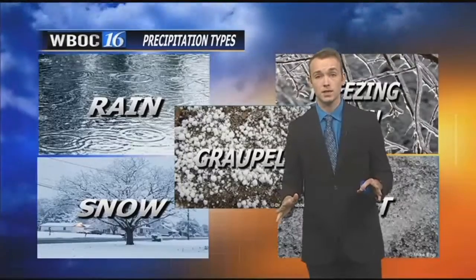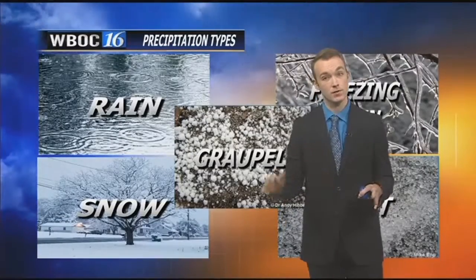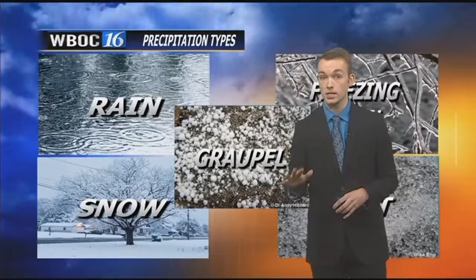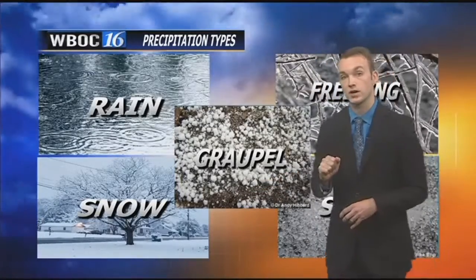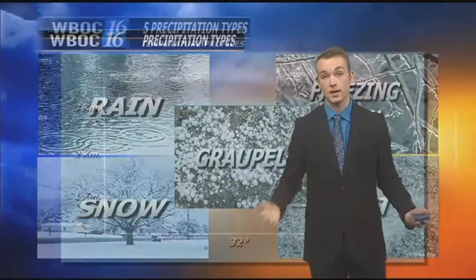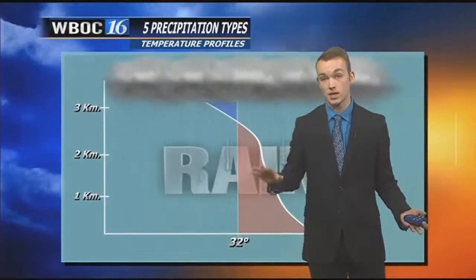Sunday morning, WBOC meteorologist Alex Seymour takes us to school in his latest Weather 101, where he tells us how Mother Nature determines what type of precipitation we get during a storm, from rain to snow to graupel. It's been a wild last month of weather here in Delmarva. We've seen every form of precipitation that you could possibly see, including this rare form of precipitation, graupel, which fell just this past Sunday. But how do we determine the precipitation types that will fall?